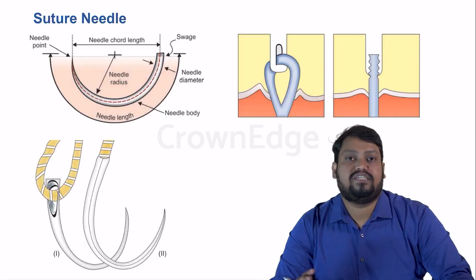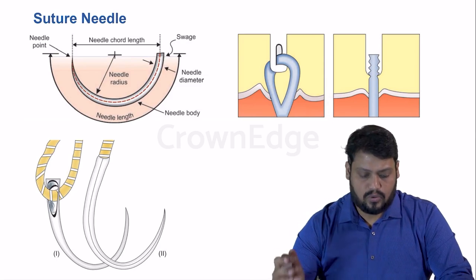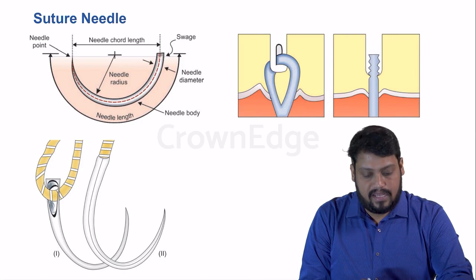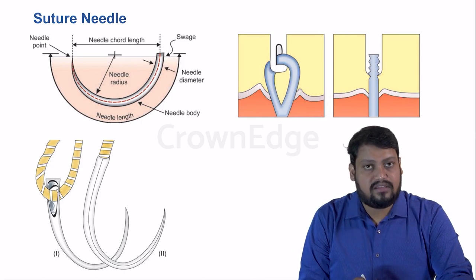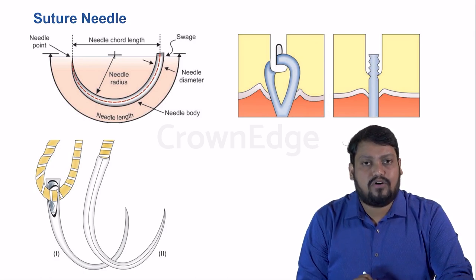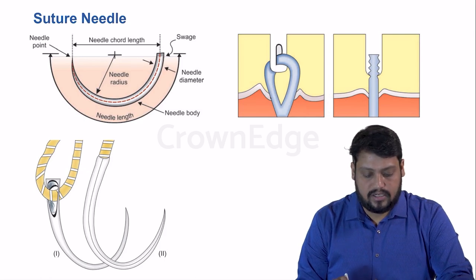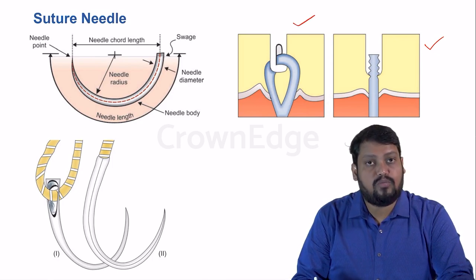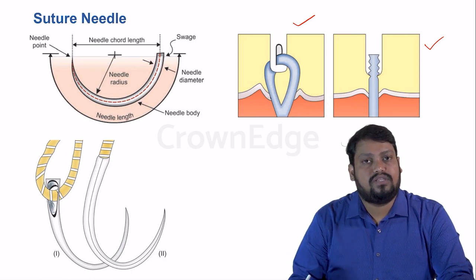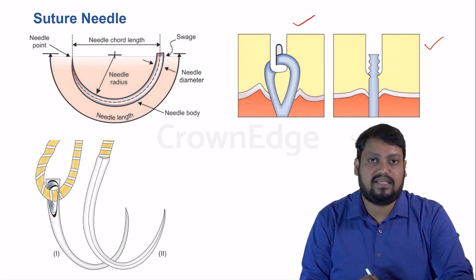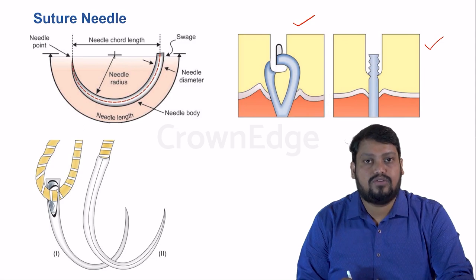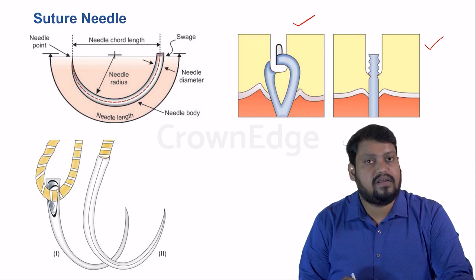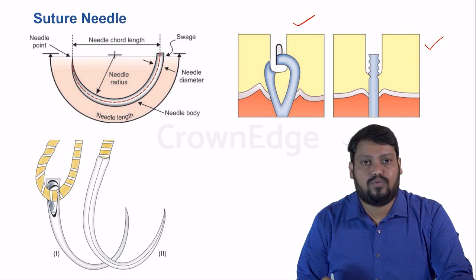Now let's look at the suture needle. The needle has three parts: the needle point, needle eye, and the body. There are two types of attachment between needle and thread: swaged, where the thread is directly merged with the needle with no loop, and the conventional tied method with a loop. The swaged needle is less traumatic. Questions may provide diagrams asking you to identify which is a swaged versus a tied needle.